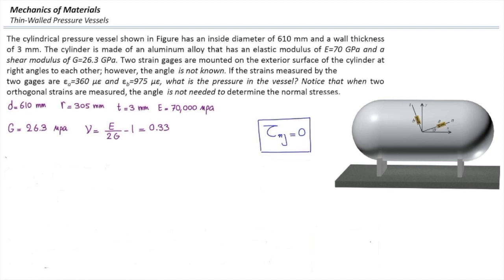Also, there is some hidden information. Tau xy in the original plane is zero because on the pressure vessels there is no shear stress. Also, there is no shear strain on the original plane, right?